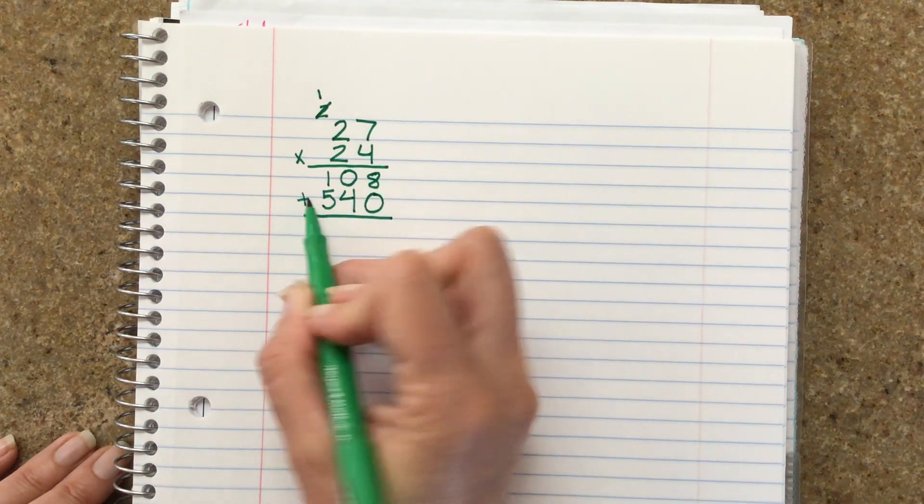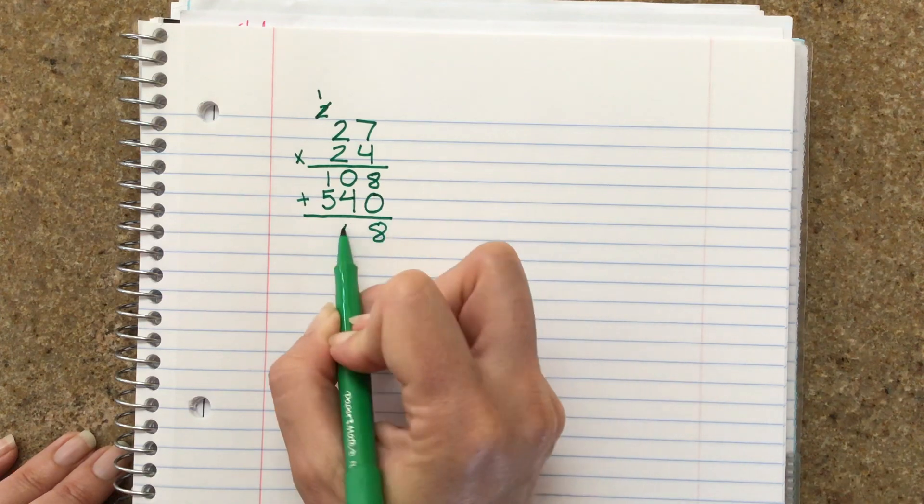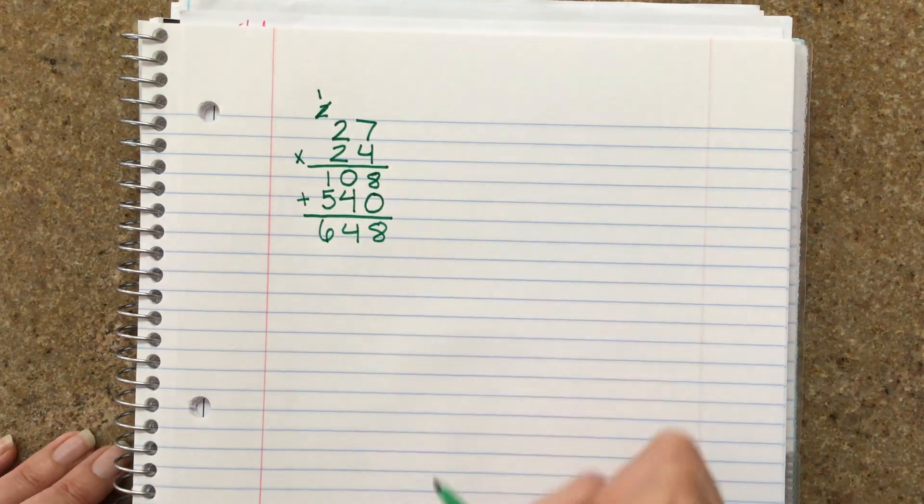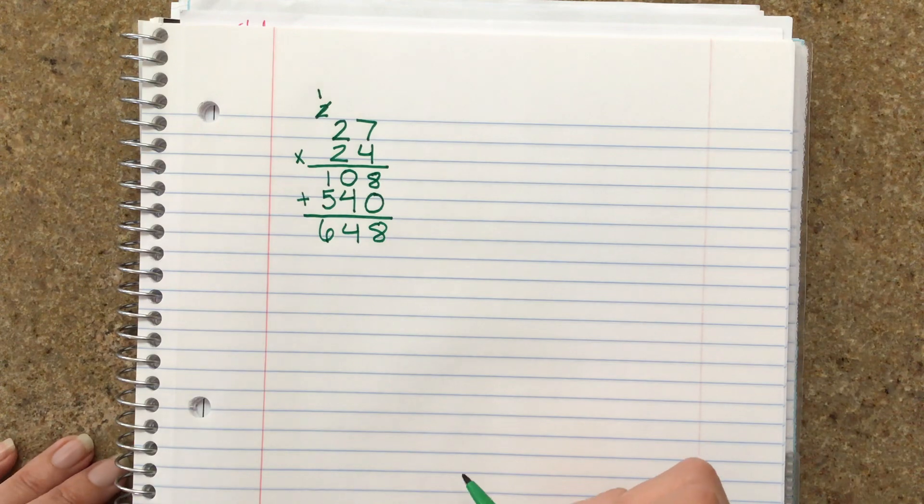And then we add these together. 8, 4, and 6. So that's how we learned double-digit multiplication.